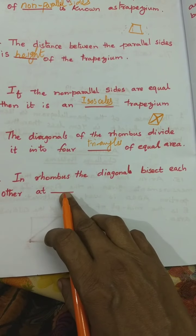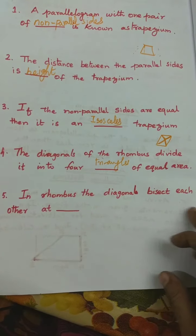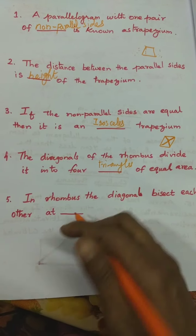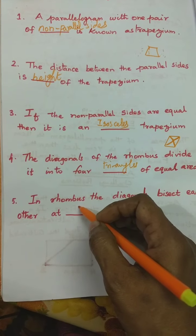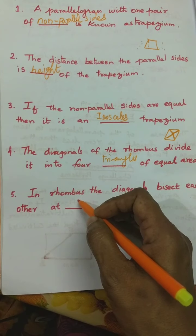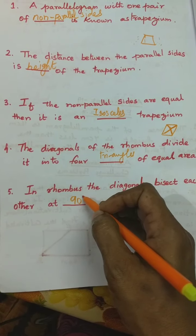In a rhombus, the diagonals bisect each other at 90 degrees.